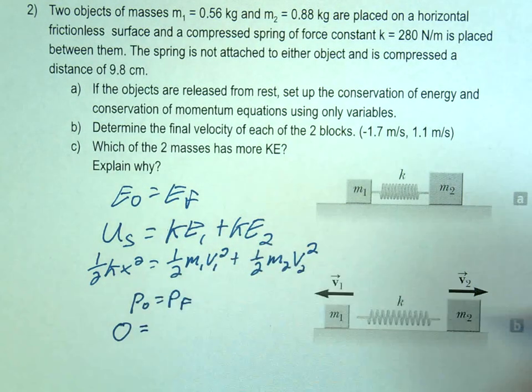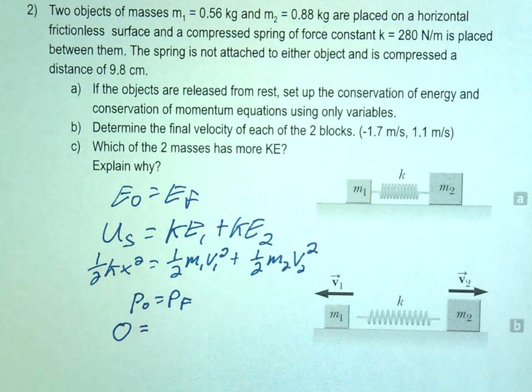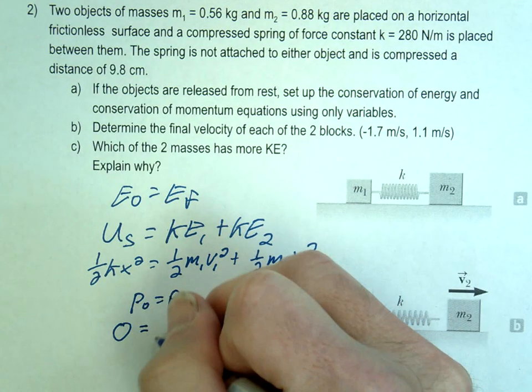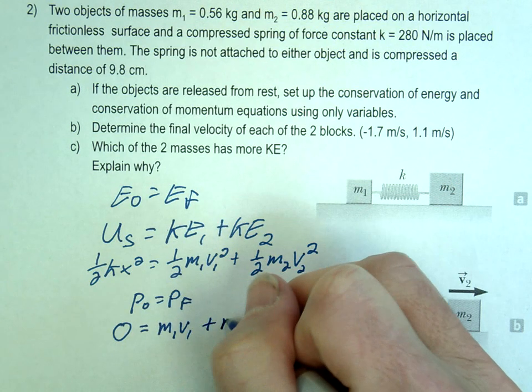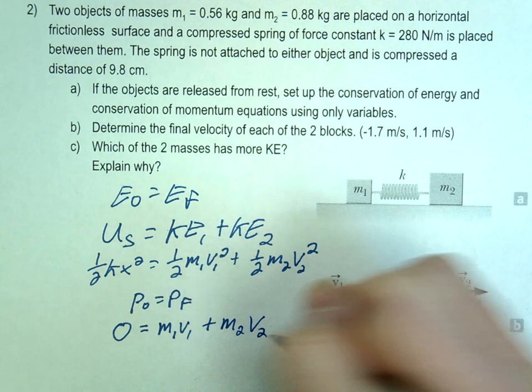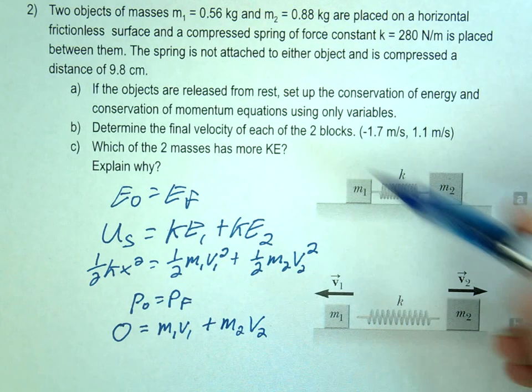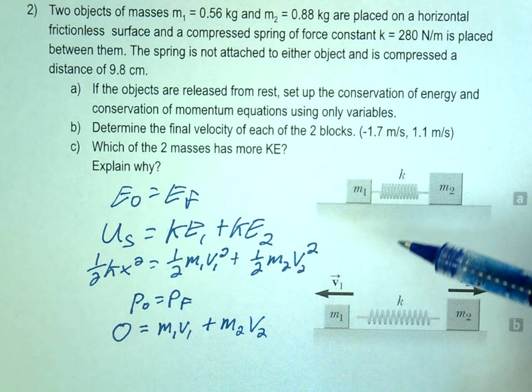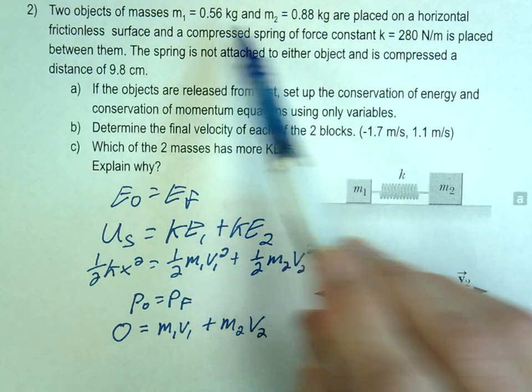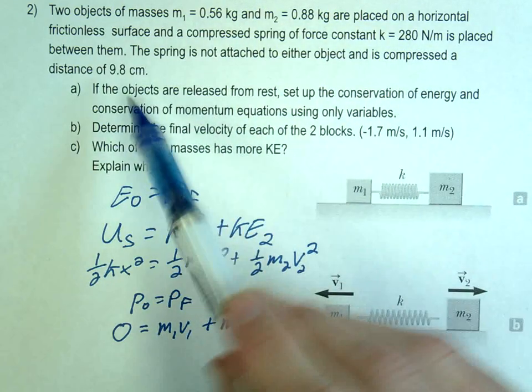That should equal the two momentums. So we have one has a momentum M1 V1. The other one has a momentum M2 V2. So that's the setup. We are solving for velocities. They gave you the masses and the K and the X.